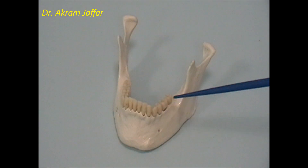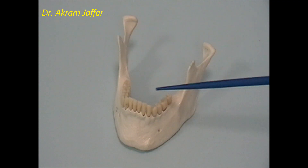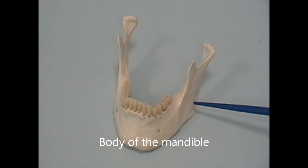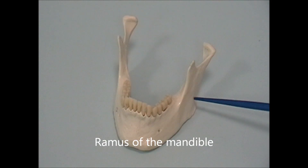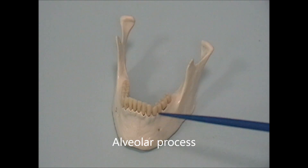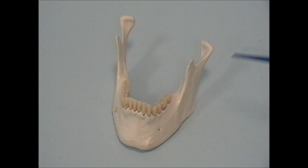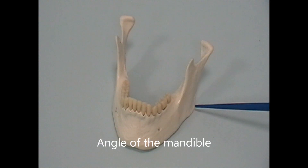This is the mandible. Generally, it is a horseshoe-shaped or U-shaped bone. It has a body and a perpendicular part, which is called the ramus of the mandible. There is an alveolar process that holds the mandibular teeth. In between the body and the ramus of the mandible is the angle of the mandible.